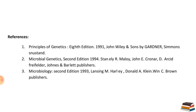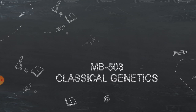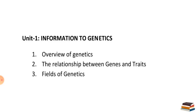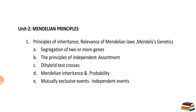The third paper is Classical Genetics. We start with Mendel's principles. Unit 1 is introductory — an overview of genetics, the relation between genes and traits, and the different fields of genetics such as classical genetics, evolutionary genetics, and molecular genetics. Unit 2 covers Mendelian principles in detail.